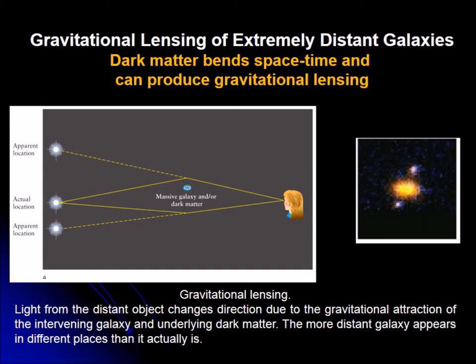Dark matter can be observed, quote unquote, by gravitational lensing. We have seen this effect before. Basically, we have a source shining in all directions and an observer. Under normal circumstances, the light coming in one direction would strike the eye and the person would see the object in the straight direction.